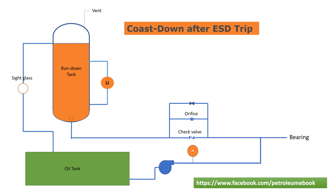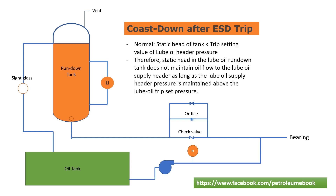Coast-down after emergency shutdown trip: by virtue of the system design, the maximum static head from the run-down tank is lower than the lube oil trip-set pressure. Therefore, the static head in the lube oil run-down tank does not maintain oil flow to the lube oil supply header as long as the lube oil supply header pressure is maintained above the lube oil trip-set pressure.